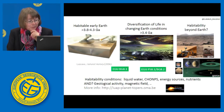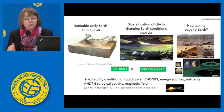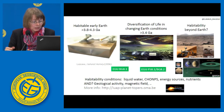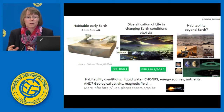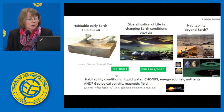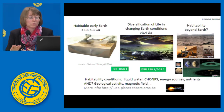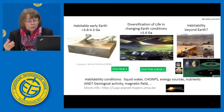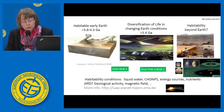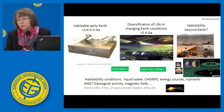Coming back to habitability: the classical conditions proposed are the presence of liquid water either at the surface or under the surface, some elements that make up life, energy sources — which can be light or electron transfer via redox reactions — and nutrients. But Earth is very special because it's a very geologically active planet with a magnetic field and other particular features that might also be important for habitability. Right now there are different programs and missions looking at the habitability of early Mars — that's what Curiosity is doing, with some results presented just in the next room.